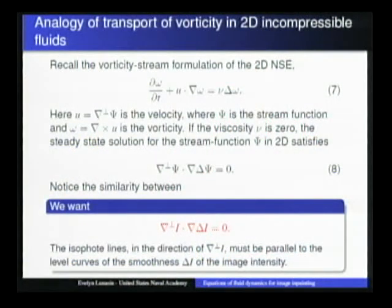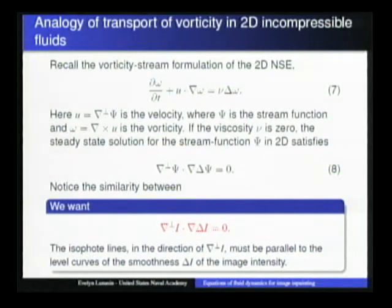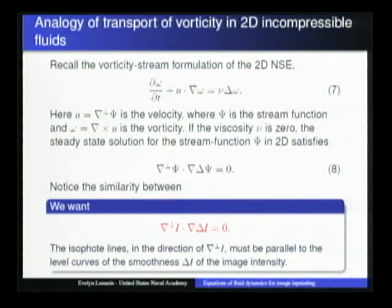The algorithm proposed by Bertalmio, Sapiro, Ballester, and Caselles in 2000 evolves this equation to steady state, adding an extra term to stabilize the numerical simulation. This term can be written using an anisotropic diffusion operator G that restricts diffusion to regions without edges. The elegant analogy with 2D incompressible fluids — first discovered by Bertalmio, Sapiro, and Bertozzi in 2001 — identifies image intensity as the stream function in the 2D vorticity formulation, where the nonlinear inpainting term corresponds exactly to the vorticity-stretching term in 2D Navier-Stokes.